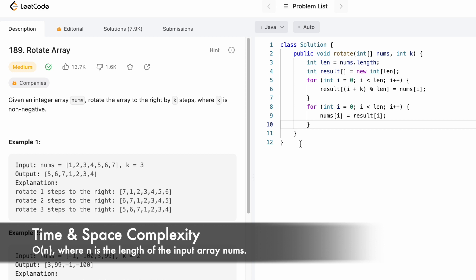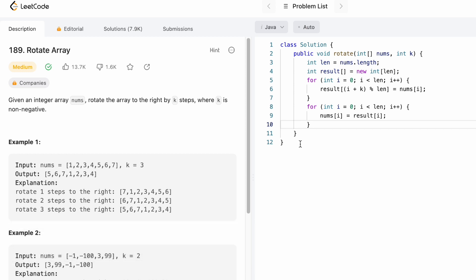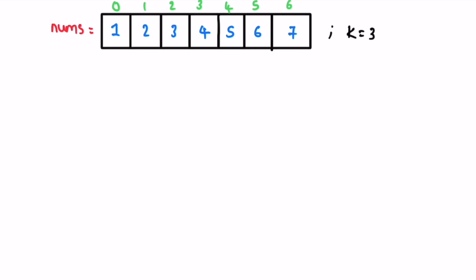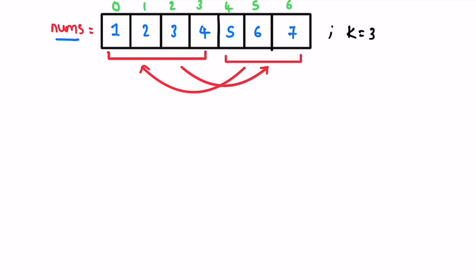Now let's take a look at the solution using O(1) space. It means that you have to rotate the nums array itself in place. Since k is equal to 3, you have to get the last three elements to the front of the array because rotating right moves them to the front, and we have to get the remaining elements to the end.